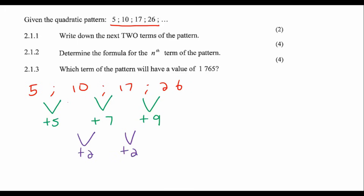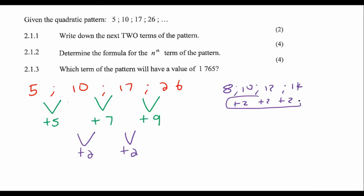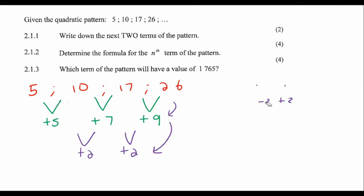The second level becomes constant — plus 2, plus 2, plus 2 the whole time. It's not the same as grade 12 arithmetic. In grade 12 arithmetic it would be more like 8, 10, 12, 14 — because then you're just adding 2 each time, so that's the first difference. But in grade 11, we looked at the second difference that becomes constant. That is called a quadratic number pattern.